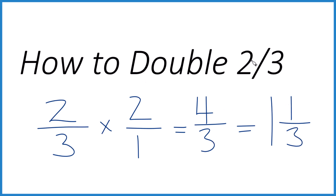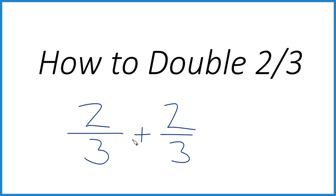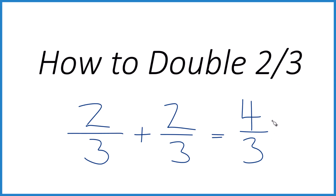So when you double 2 thirds, you get 1 and 1 third. There is another way we could do this. We could take 2 thirds plus 2 thirds. With fractions, if the denominator is the same, we just add the numerators — 2 plus 2 is 4 — then bring the denominator across, we get 4 thirds, and we could change that to a mixed number if we wanted as well.